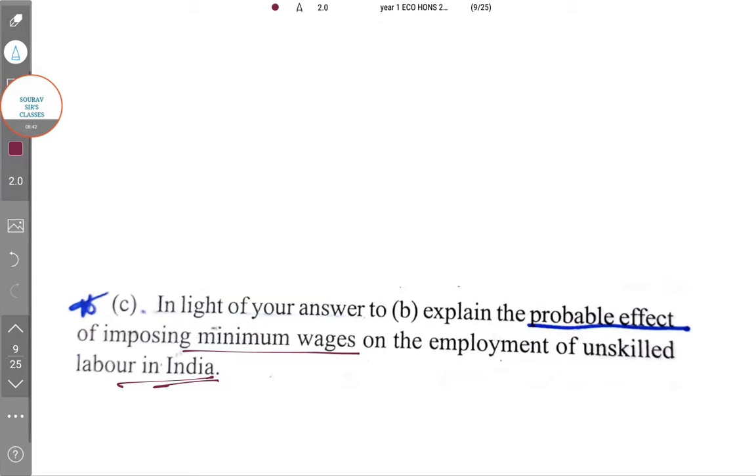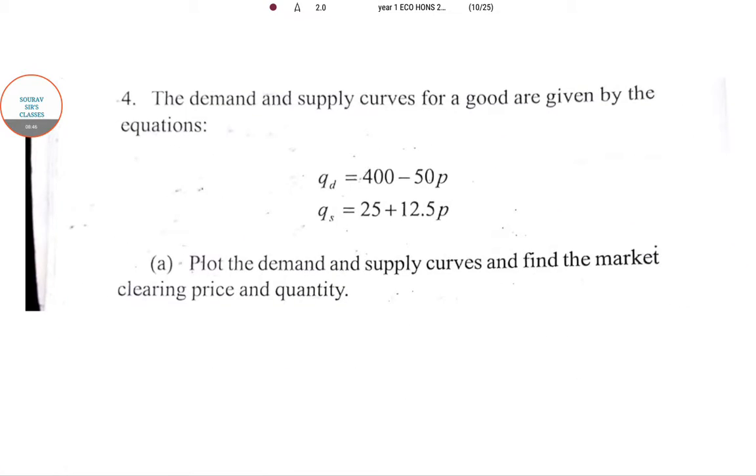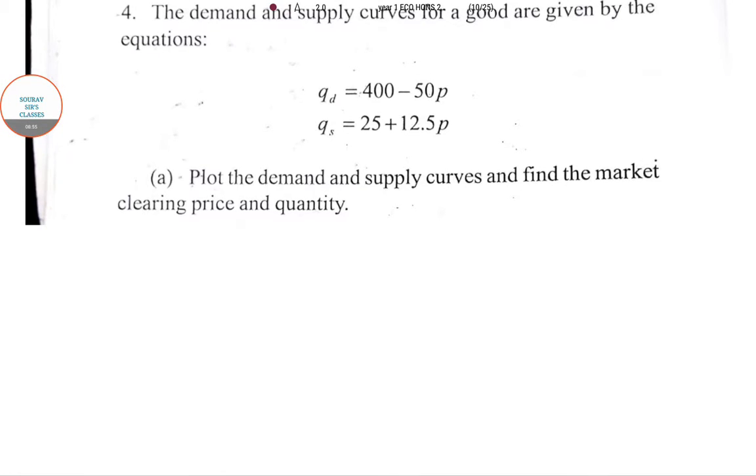Next question: the supply curve for a good is given by the equation. Plot the demand and supply curves and find the market clearing price. Remember that the market clearing price is where demand meets supply, so Qd = Qs, which is the equilibrium point.